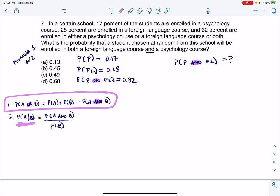But instead of A and B, I'm going to swap out P and FL. Let's write that. I want the probability of P or FL - psychology or foreign language. It's the probability of P plus the probability of FL minus any overlap.